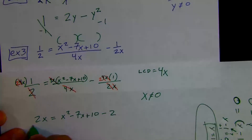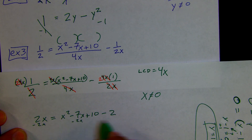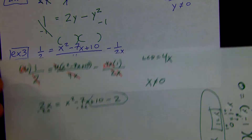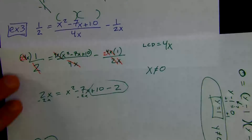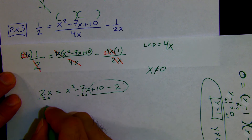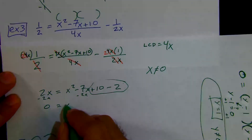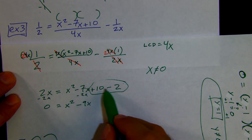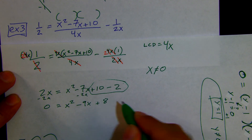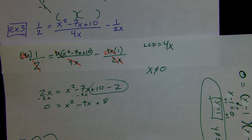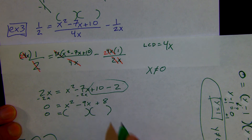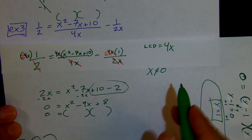Let's get everything to one side and combine terms. We have 2x equals x squared minus 7x plus 10 minus 2. Moving everything over and combining: x squared, negative 7x minus 2x gives minus 9x, and 10 minus 2 gives 8. So we get 0 equals x squared minus 9x plus 8. Now we're ready to do the x method and find our answers.